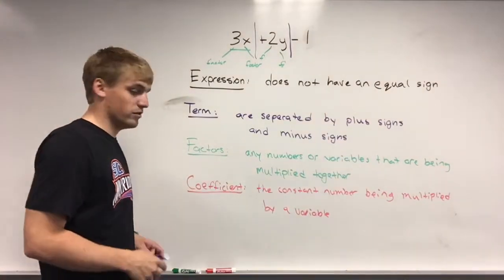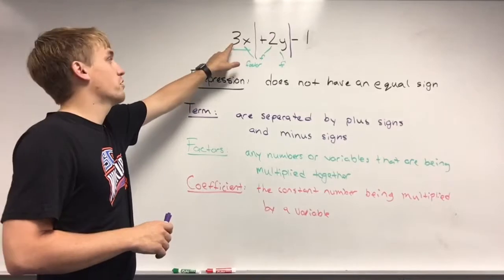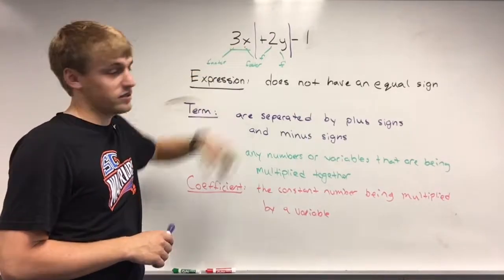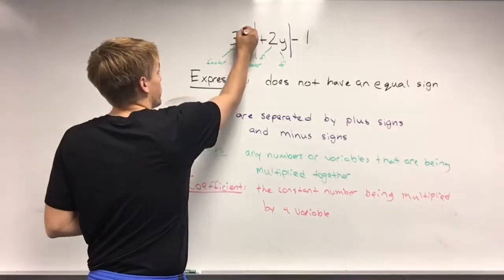So that would be an example, or an example of this would be if you look at the first term again. We have a 3, or a number being multiplied by a variable, which is x. So the coefficient would be 3.